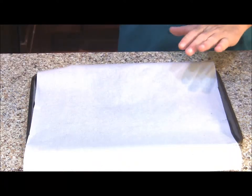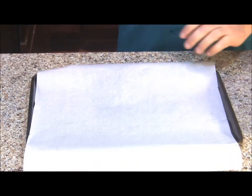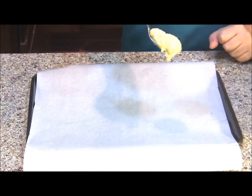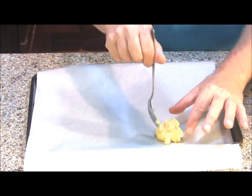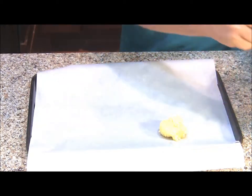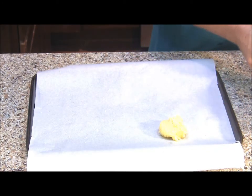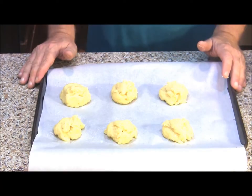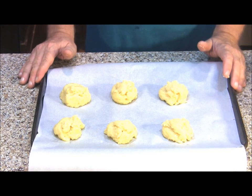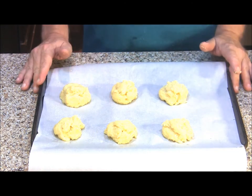I lined the baking tray with some parchment paper and gave it a light coating of cooking spray and now we're just going to drop our dough in rounded spoonfuls onto our tray here in six equal portions. Now we're going to bake these in a 400 degree oven for 30 to 40 minutes until they're nice and golden brown.